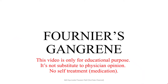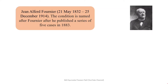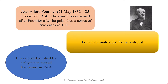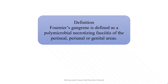Hi! Today we are going to talk about Fournier's gangrene. It is named after Jean-Alfred Fournier, who was a French dermatologist and venereologist. The condition was first described by a physician named Warren in the year 1764, and named after Jean-Alfred Fournier, who published a series of five cases in the year 1883.